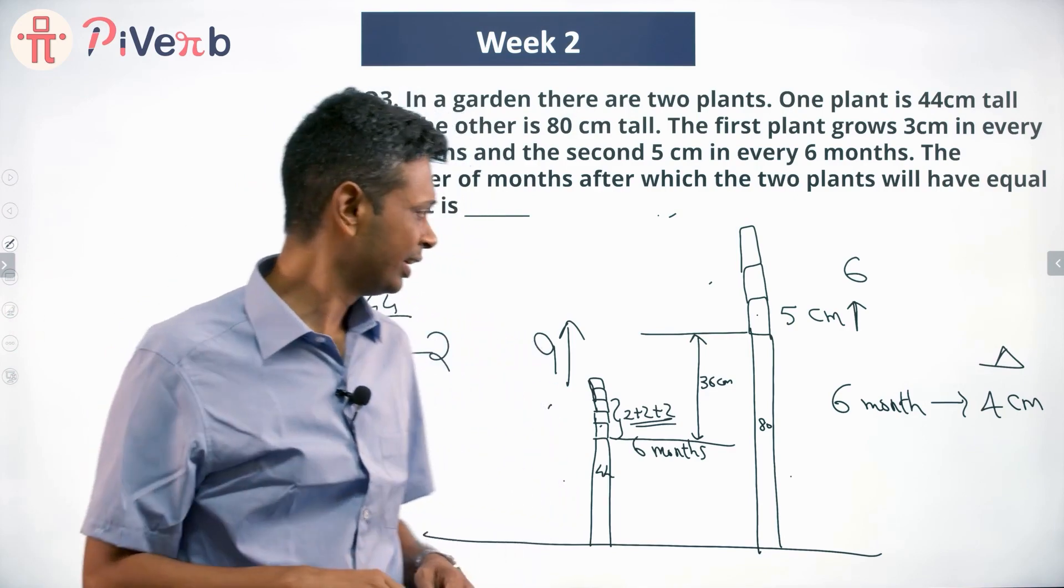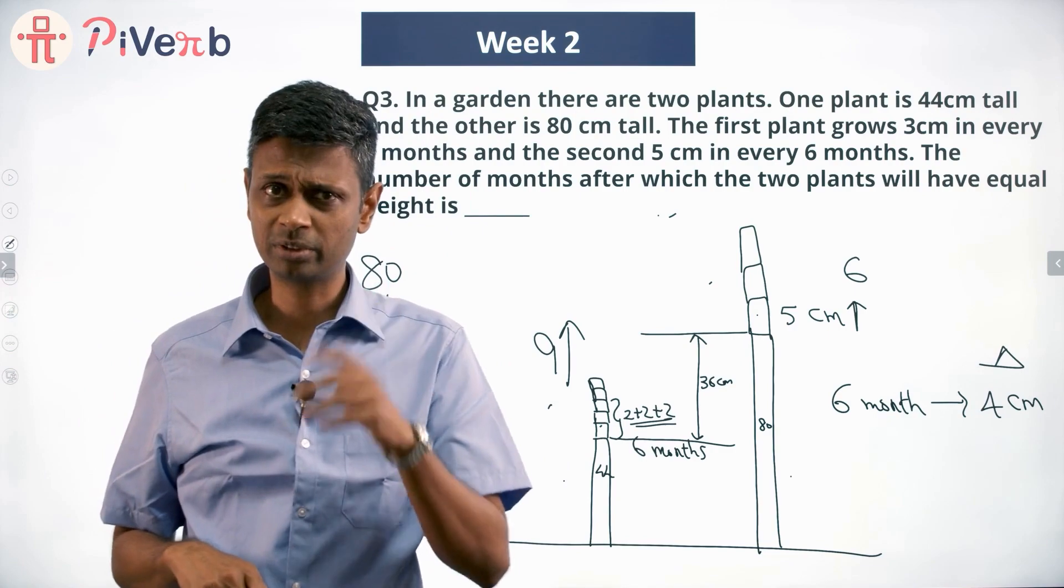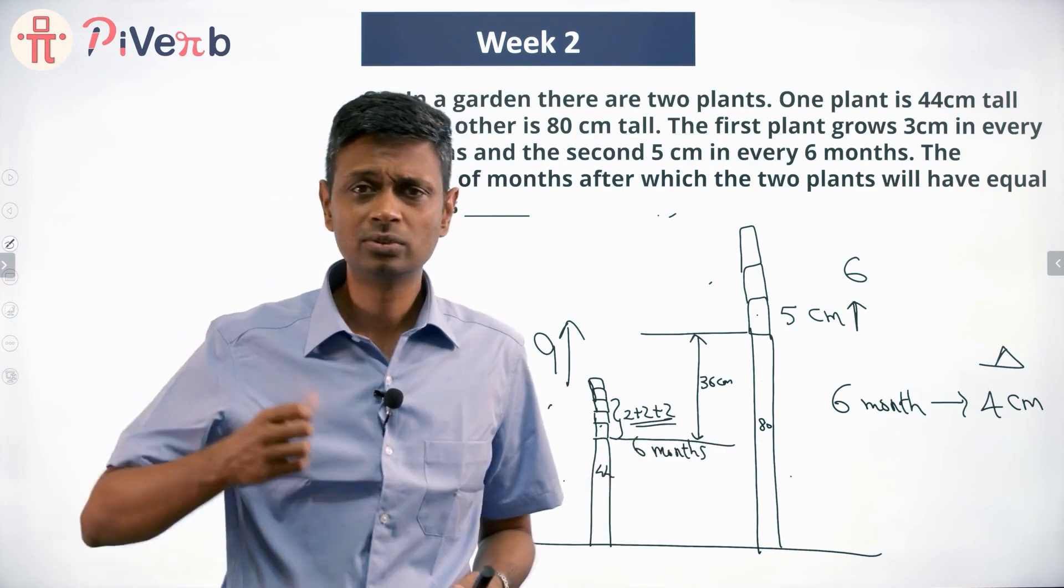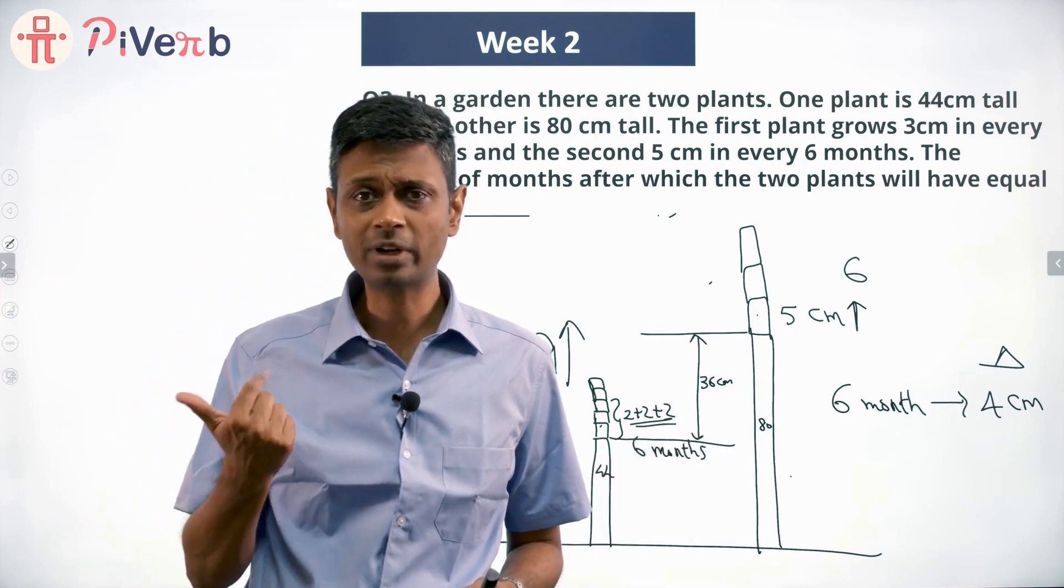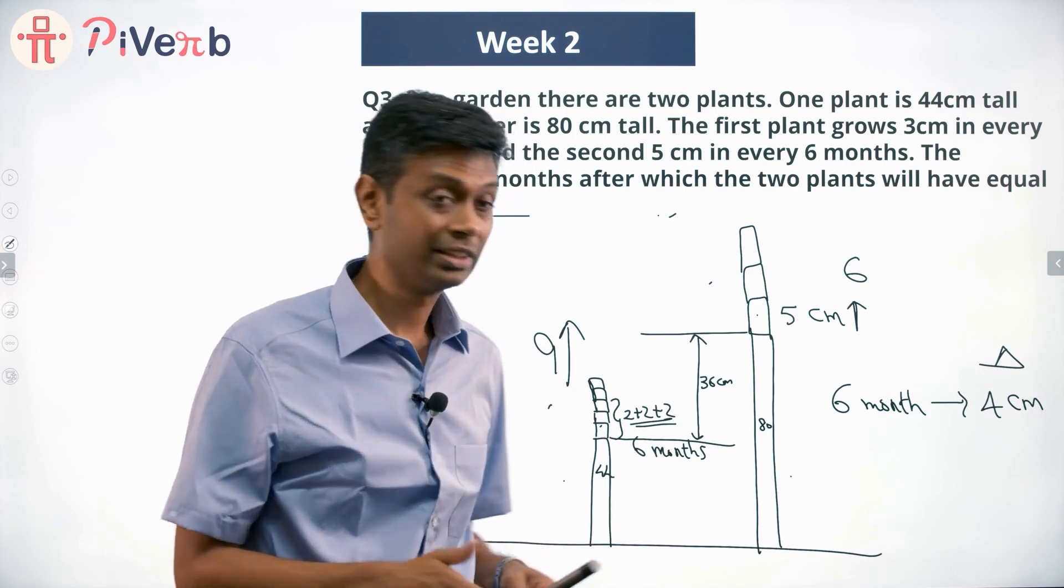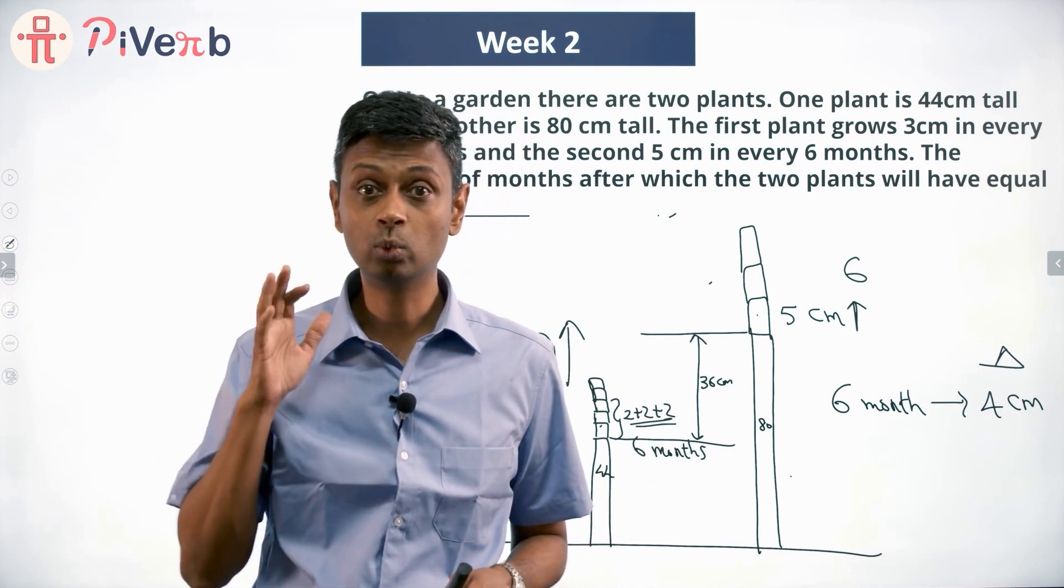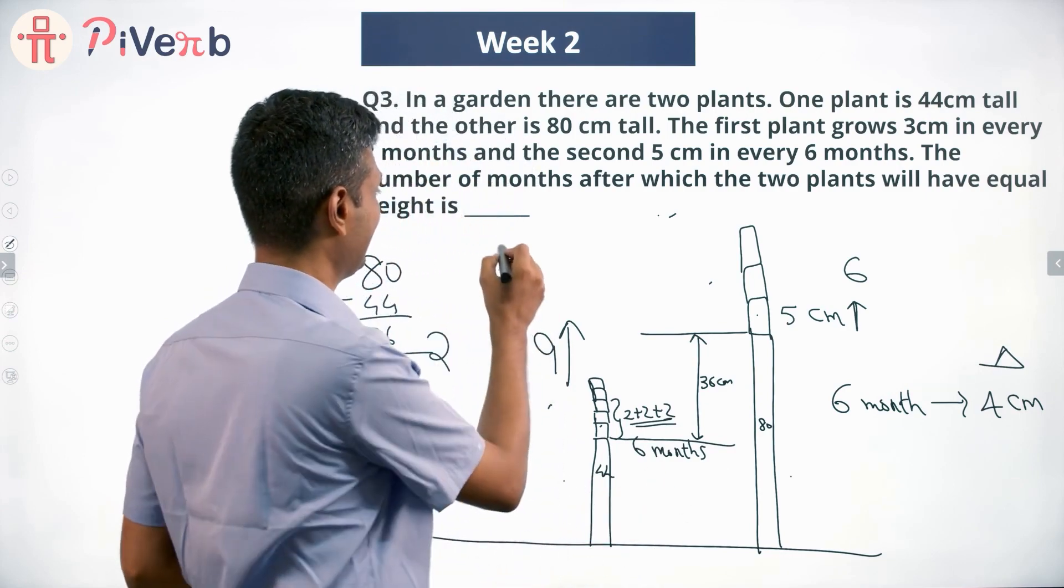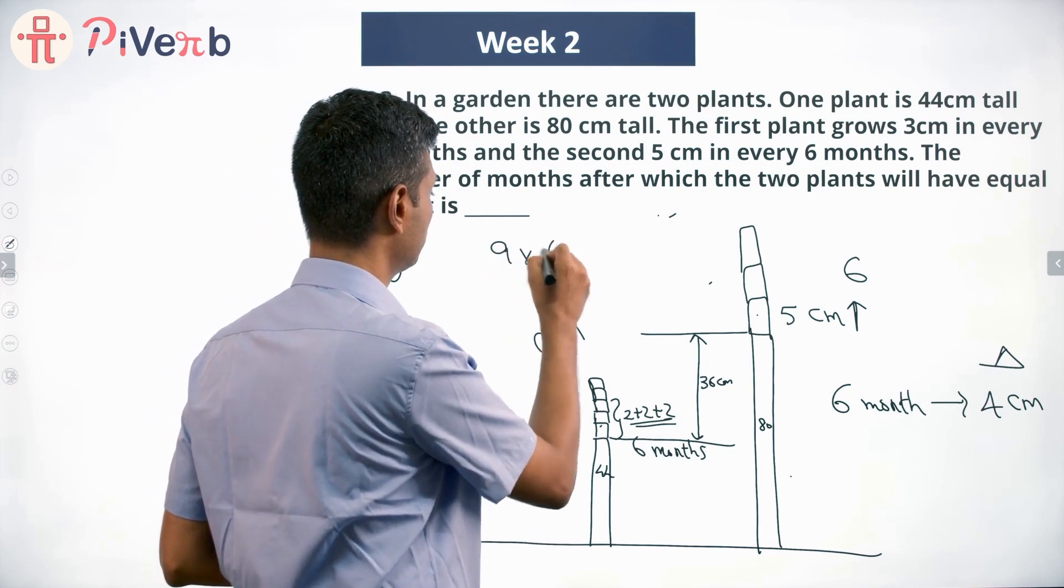It catches up 4 centimeters every 6 months. How long will it take? Keep on adding 4, 4, 4, 4. When will you hit 36? In 9 sets we'll reach 36, or in 9 times 6 months. 9 times 6 is 54 months.